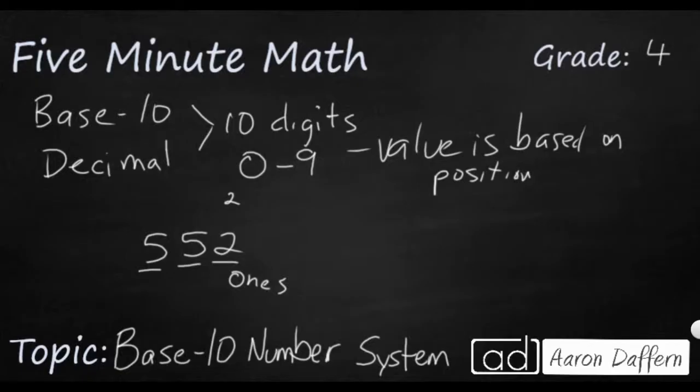But this second position is the tens place. So when it's 1 over from the ones place, we always say it is worth 10 times this particular digit. So now it's worth 50. And then we have this third place. This is the hundreds place, right?